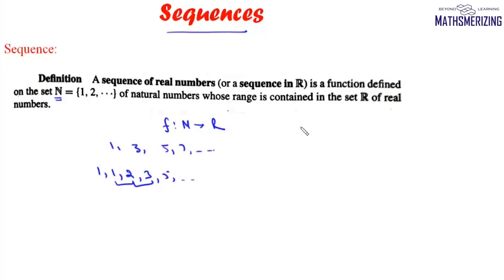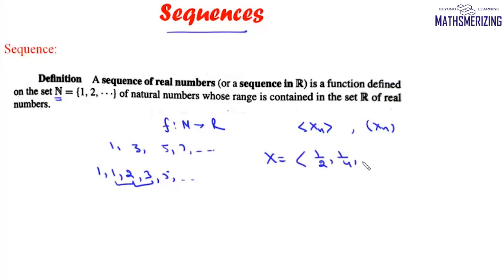There are many ways to define a sequence. The most common ways are either using angle brackets and writing its nth term, or using small brackets. For example, the sequence of reciprocals of even numbers can be written by listing terms: 1/2, 1/4, 1/6, 1/8, and so on.